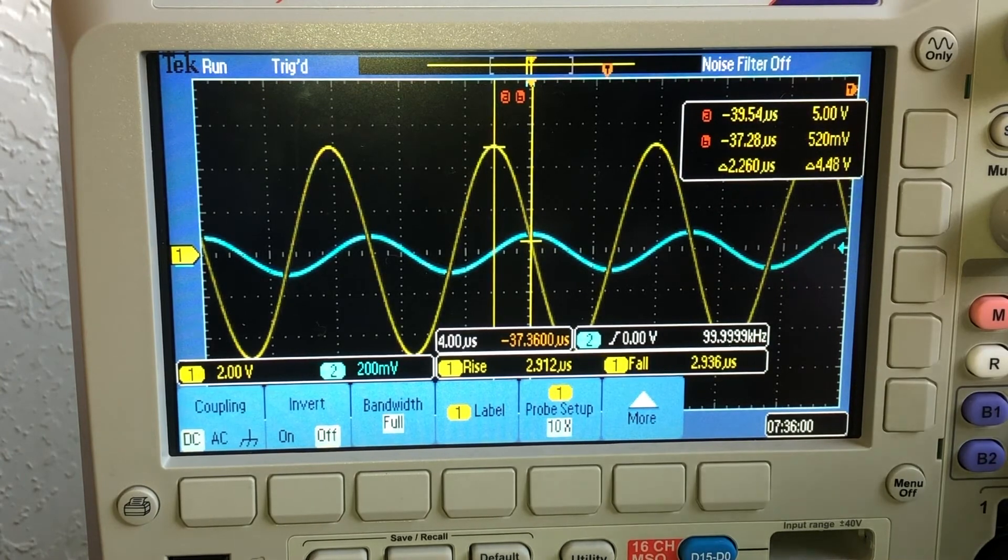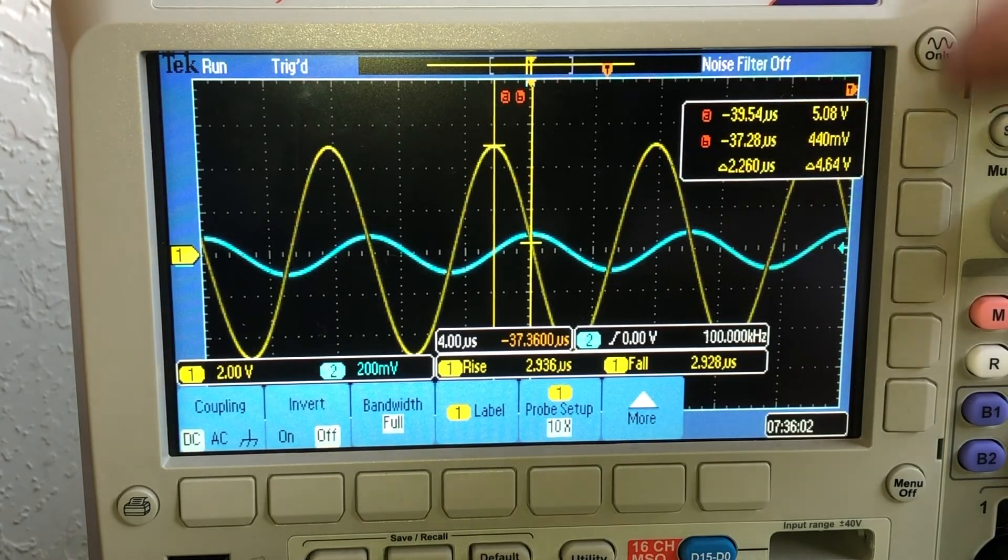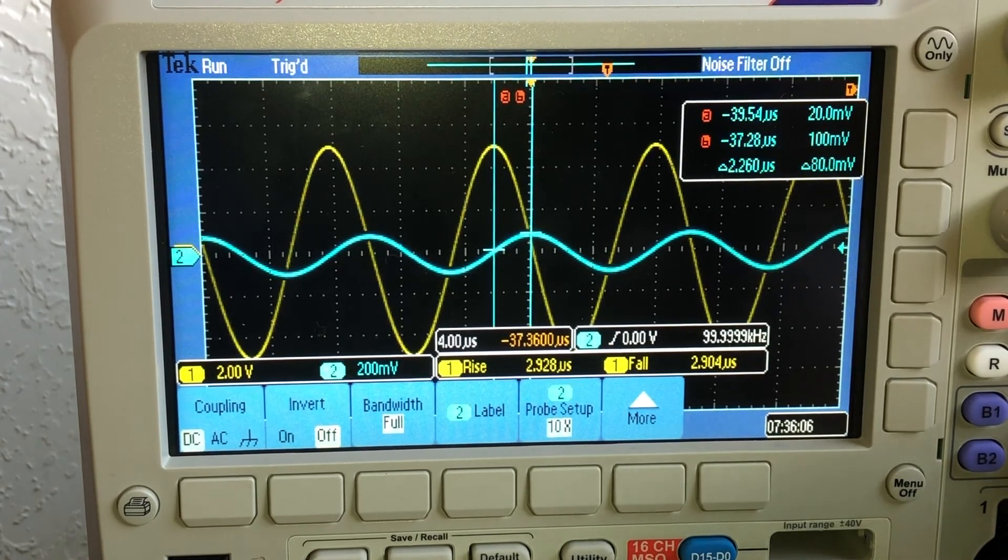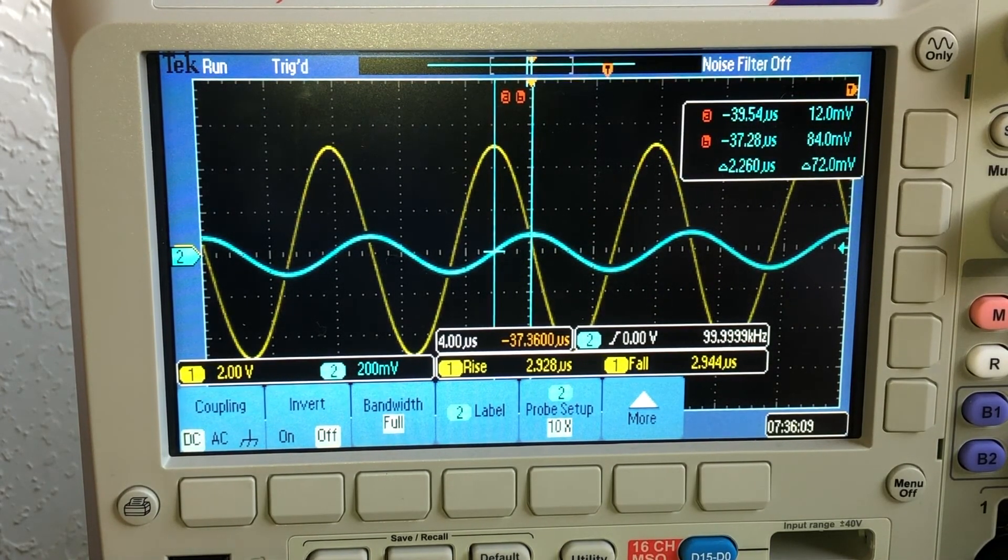Now up at 100 kHz, the peak voltage is back up to about 5 volts, and if we look at the voltage across the resistor, that's down to 92 millivolts.